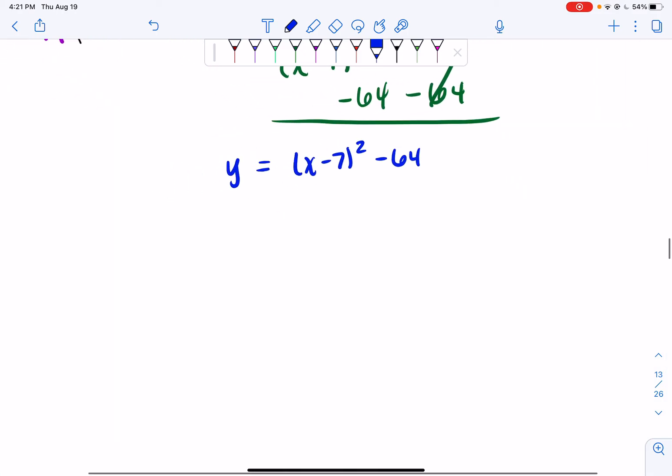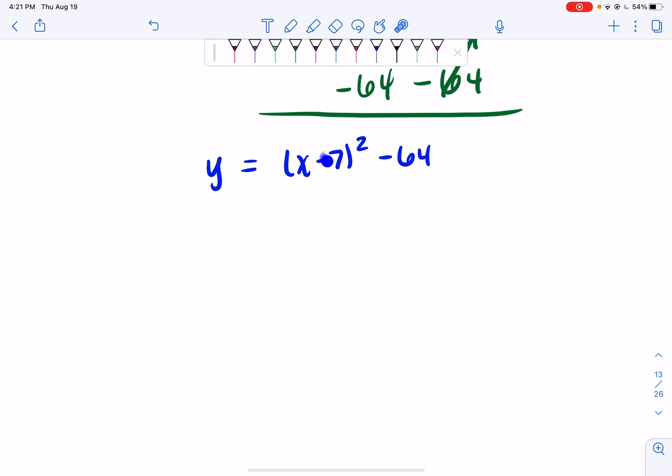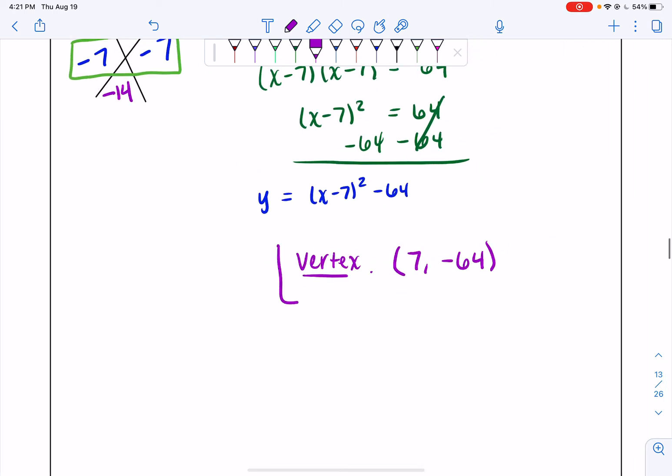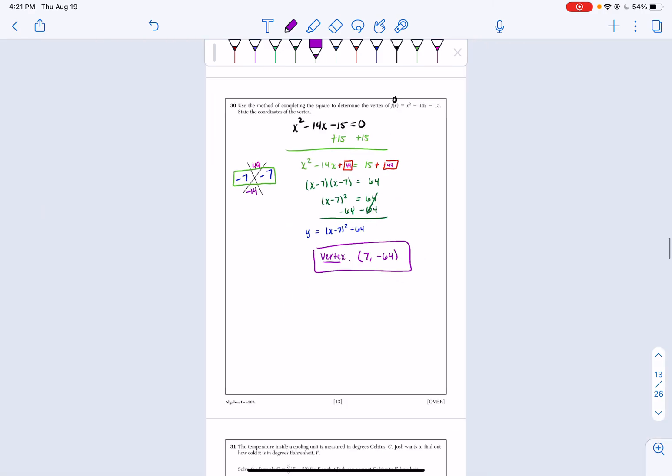We know the opposite of a minus 7 is a positive 7. And then I keep my negative 64 as a negative 64. So my vertex is 7, negative 64. And that's how you use completing the square to find your vertex.